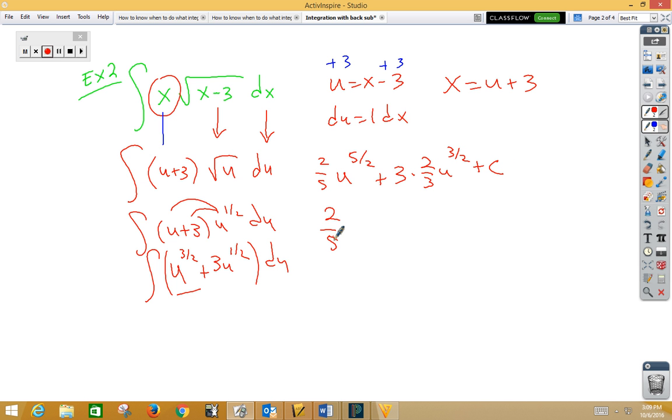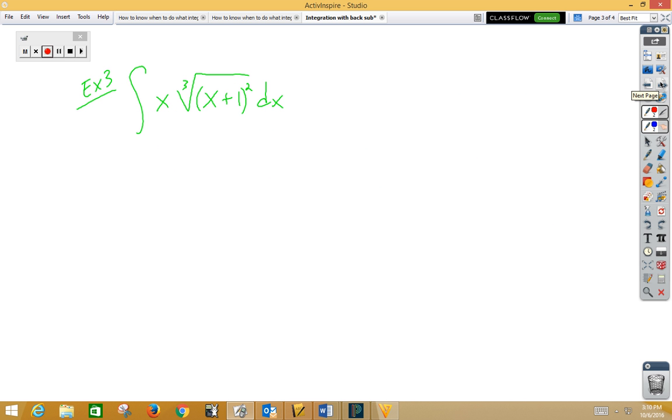But it's not really u, so we have 2 fifths times x minus 3 to the 5 halves plus these 3s are going to cross out, giving you 2x minus 3 to the 3 halves plus c. So in this example,